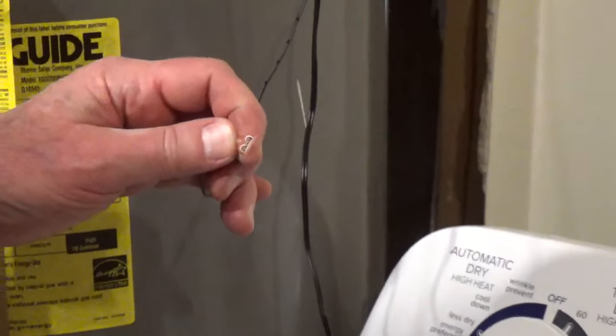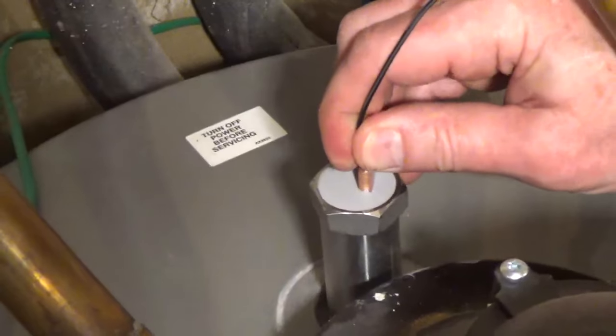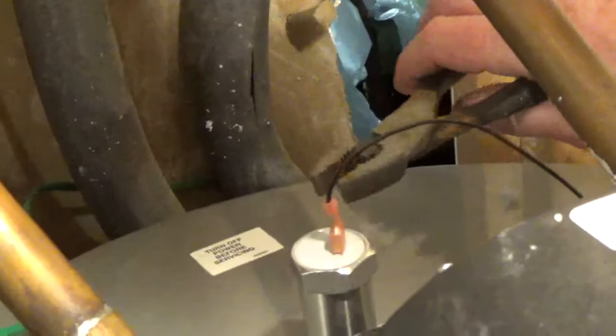Insert the spade connector onto the metal tab on the anode rod. Crimp it in place with pliers.